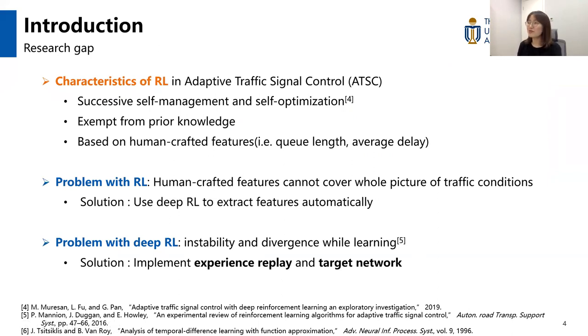Reinforcement learning is widely used in adaptive signal control and has the advantage of successive self-management and self-optimization. It is also good that it could be exempt from prior knowledge. However, it is based on human-crafted features such as queue length and average delay. Those are problems with reinforcement learning because the human-crafted features cannot cover the whole picture of traffic conditions.